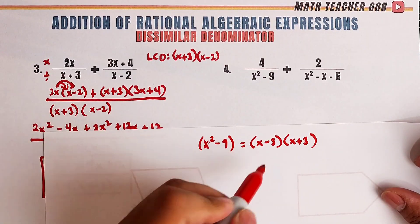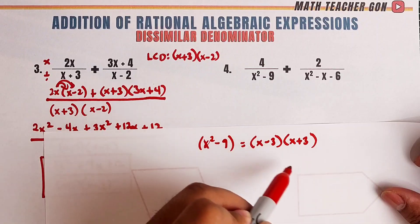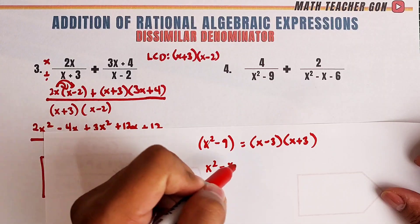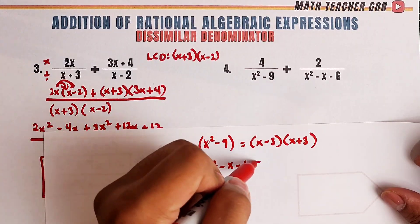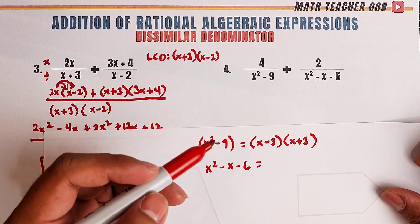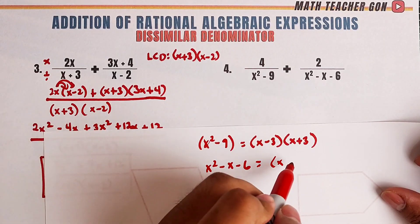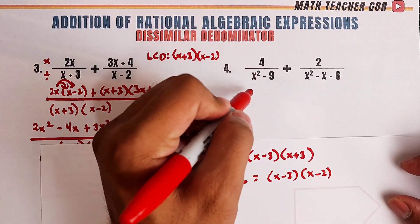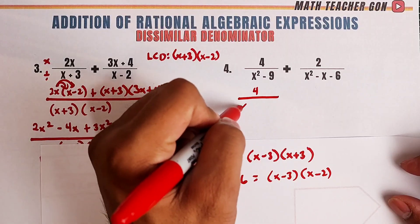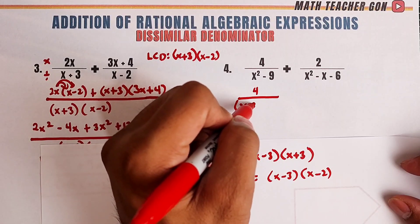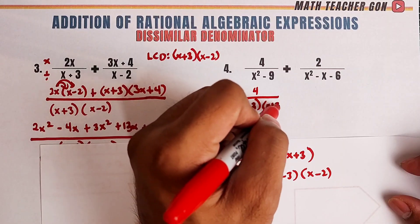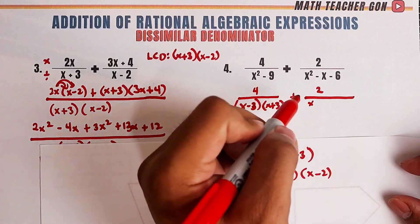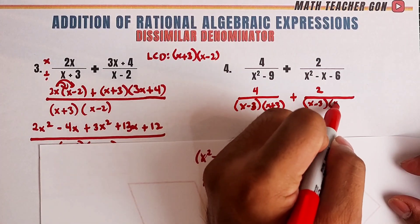So, what about this one? Our x squared minus x minus 6 can be factored as x minus 3 times x minus 2. Now, let me show you here at the bottom. We will copy this one as 4 over x minus 3 times x plus 3 plus 2 over x minus 3 times x minus 2.